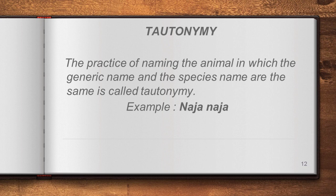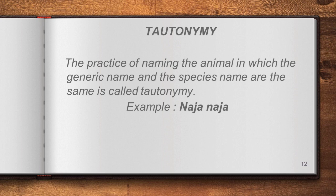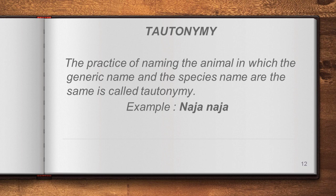Another term introduced here is tautonymy — the practice of naming an animal in which the generic name and the species name are the same. For example, the scientific name of the Indian cobra is Naja naja, where Naja is both the genus and the species name. This kind of naming is called tautonymy, and it is a three-mark question worth learning.